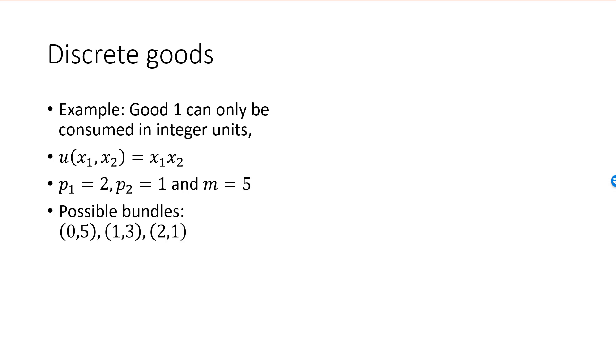In this case, we can consume 0, 1 or 2 units of good one. 3 units of good one would cost us 6, so it is not attainable.